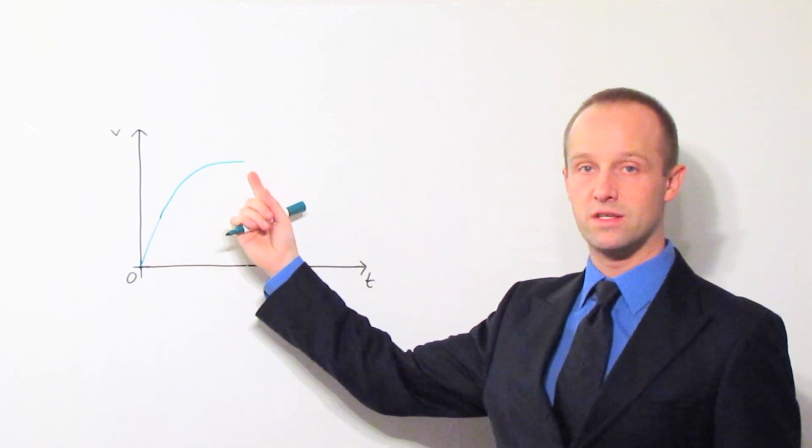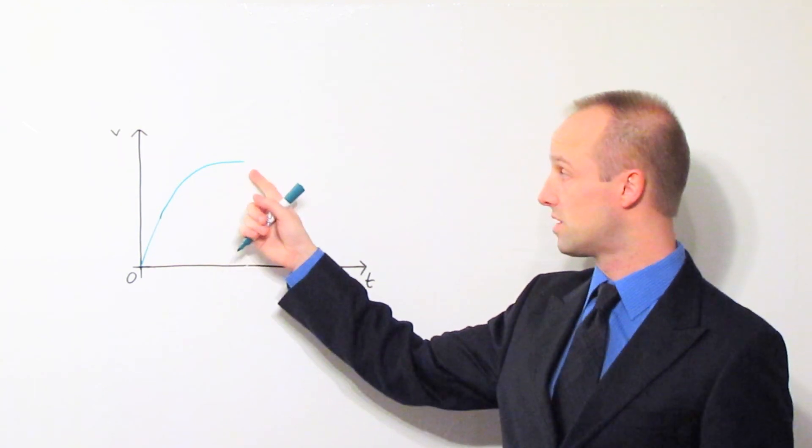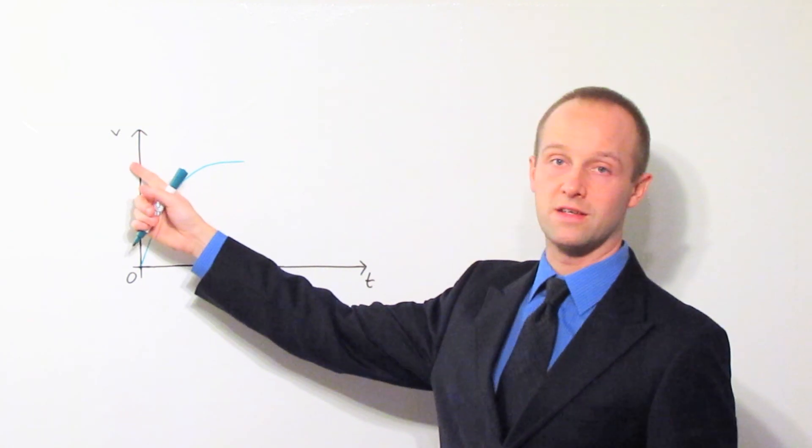And eventually he reaches this constant velocity, this constant rate of descent, and that's his terminal velocity. If you want to know what the terminal velocity is, you just read it off this axis here.